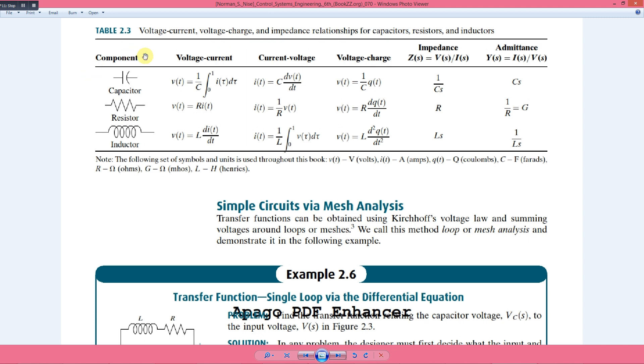So voltage relationship: here we have v(t) is equal to 1 over C integration of i(t) dt, or i(t) is equal to C into dv/dt. So this is the current through the capacitor which is possible when there is a change in the voltage.